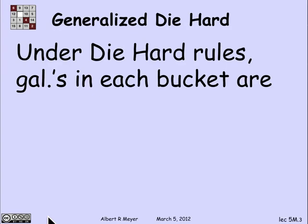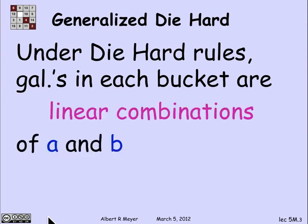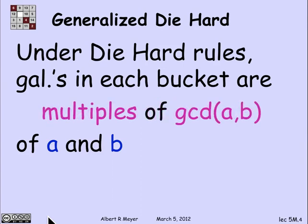When we looked at the state machine, we figured out that under the Die Hard rules, the number of gallons in each bucket at any stage is a linear combination of the bucket sizes. So at any point after any sequence of Die Hard moves, in each bucket there will be a linear combination of A and B. The point is that linear combinations of A and B are the same as multiples of the GCD.